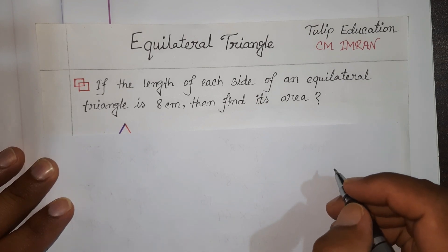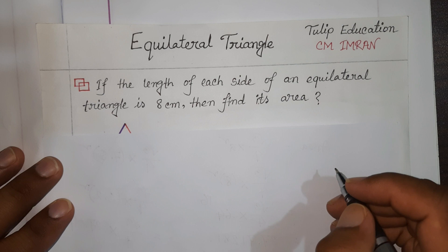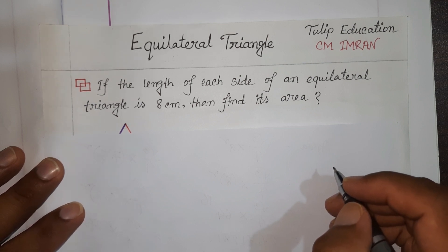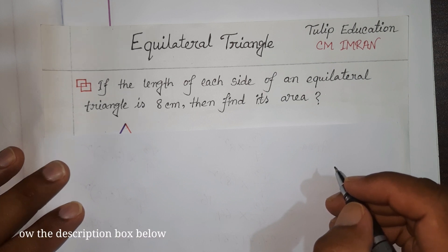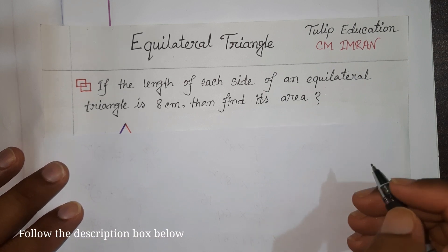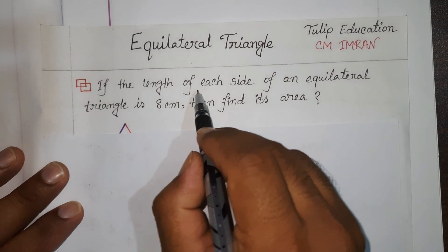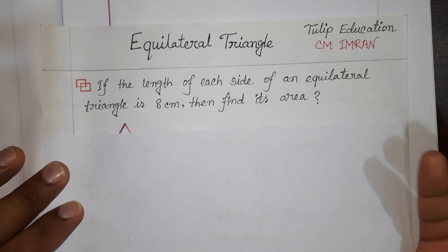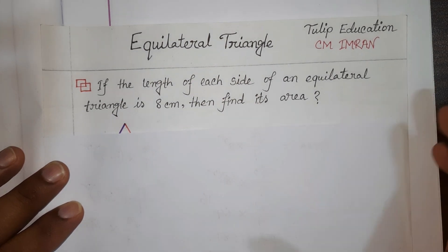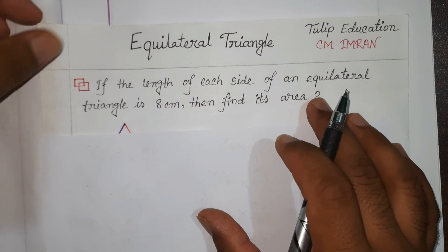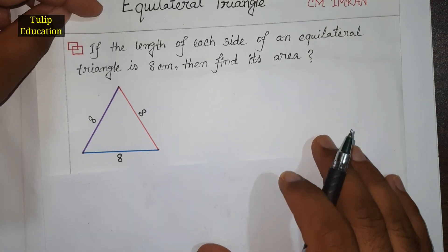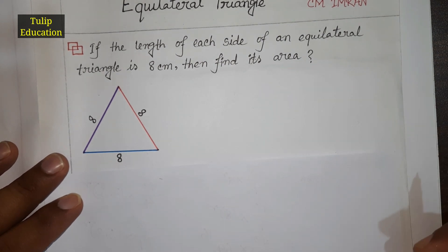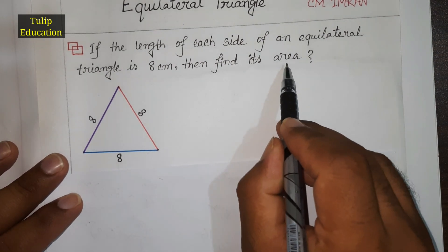Hello friends, welcome to today's tutorial. Today we are going to solve a problem related to equilateral triangles. In our previous tutorial we learned some properties of equilateral triangles. Our problem says: if the length of each side of an equilateral triangle is 8 centimeters, then find its area. If we draw this equilateral triangle, every side is 8 centimeters.